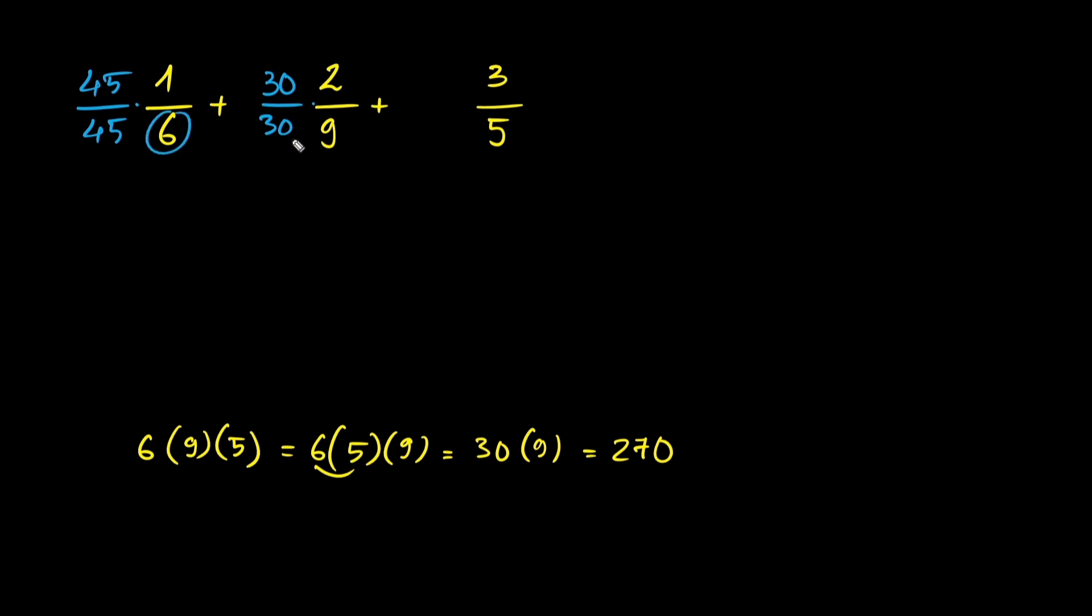For the last fraction, I'm going to use the denominators of the other two fractions. 6 times 9 is 54. So I'm going to multiply the top and bottom by 54. Using this technique, all the denominators will become 270.